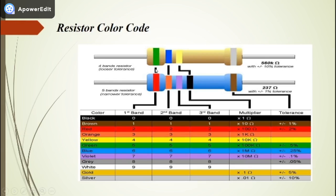The first band color shown in the table includes different numbers. The second band color, in both types of resistors, gives the second digit — you can find the number according to its color from the table. For the five-band resistor, the third band color also gives a digit, which you find in the third column of the table. The four-band resistor does not have a third digit band.